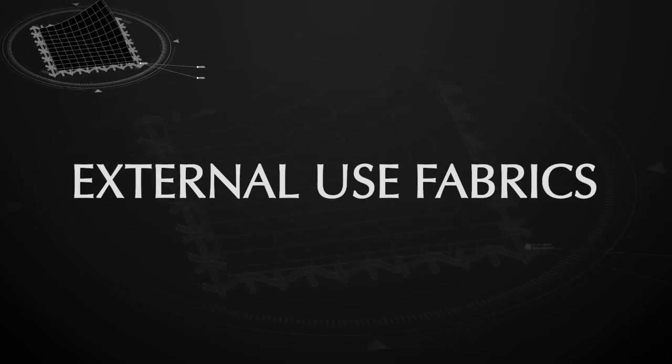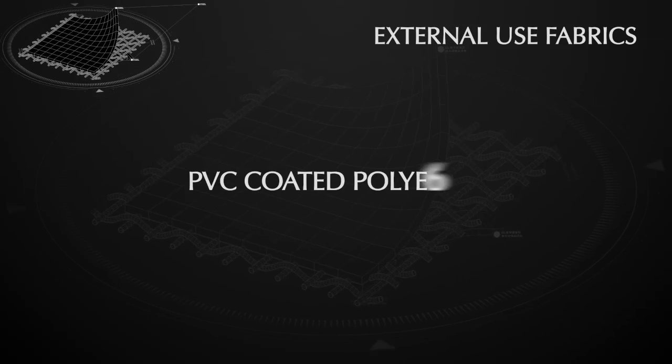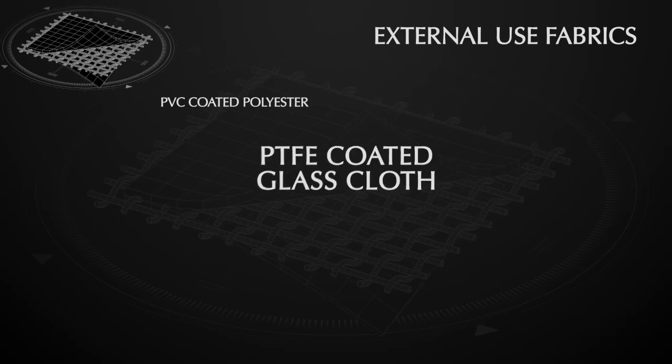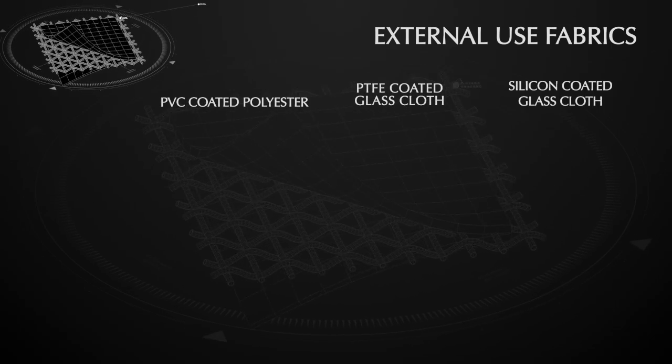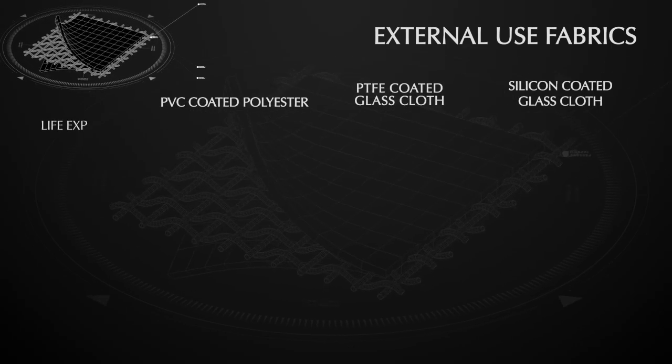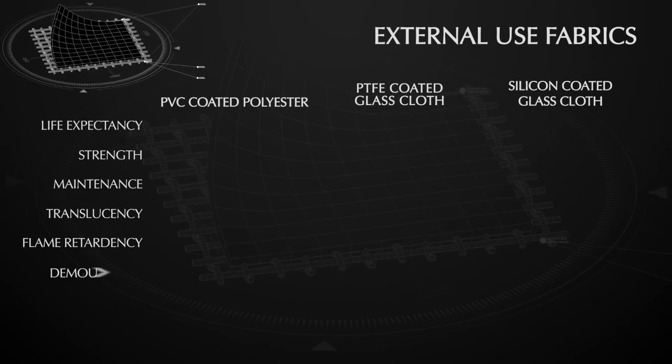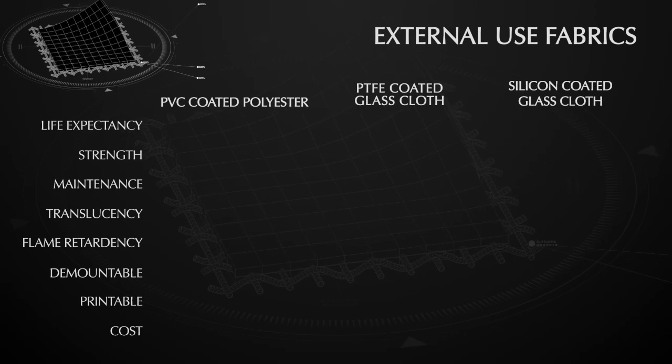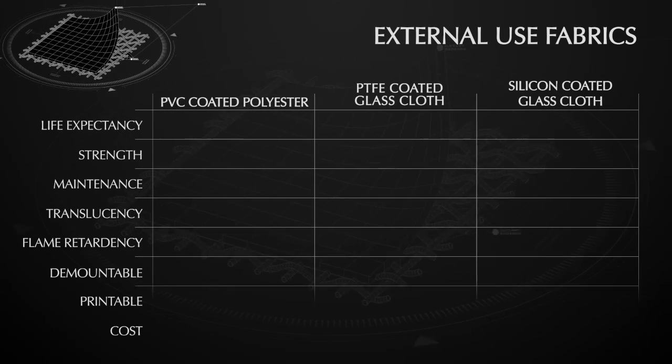For external use, the coated fabrics most commonly used are PVC coated polyester, PTFE coated glass cloth and silicon coated glass cloth. They all offer differing properties for strength, durability, translucency and of course cost. By comparing these with the client's requirements, we can help decide the optimum material for any project.